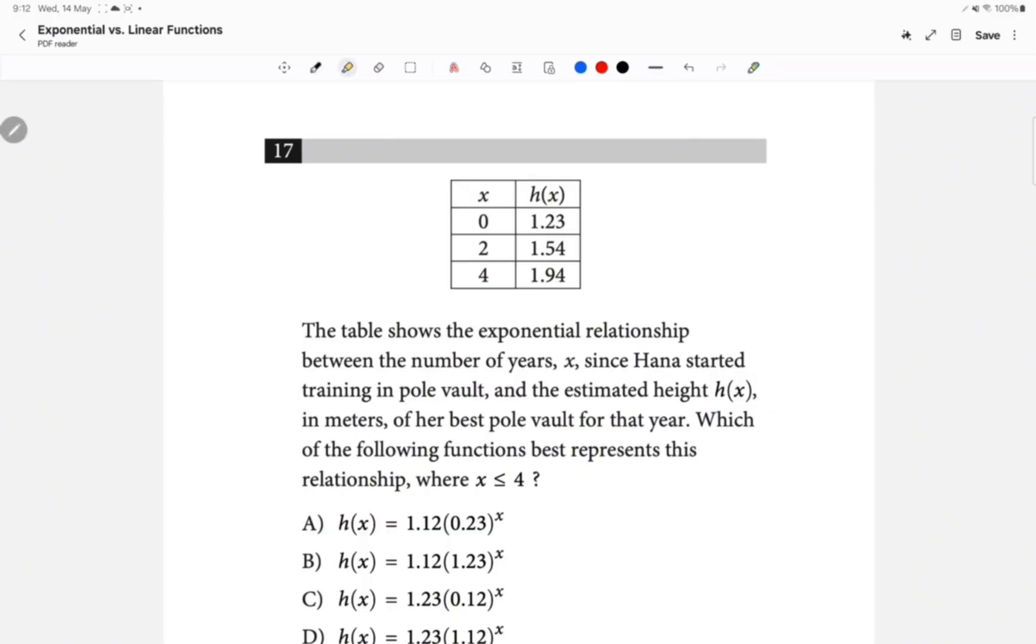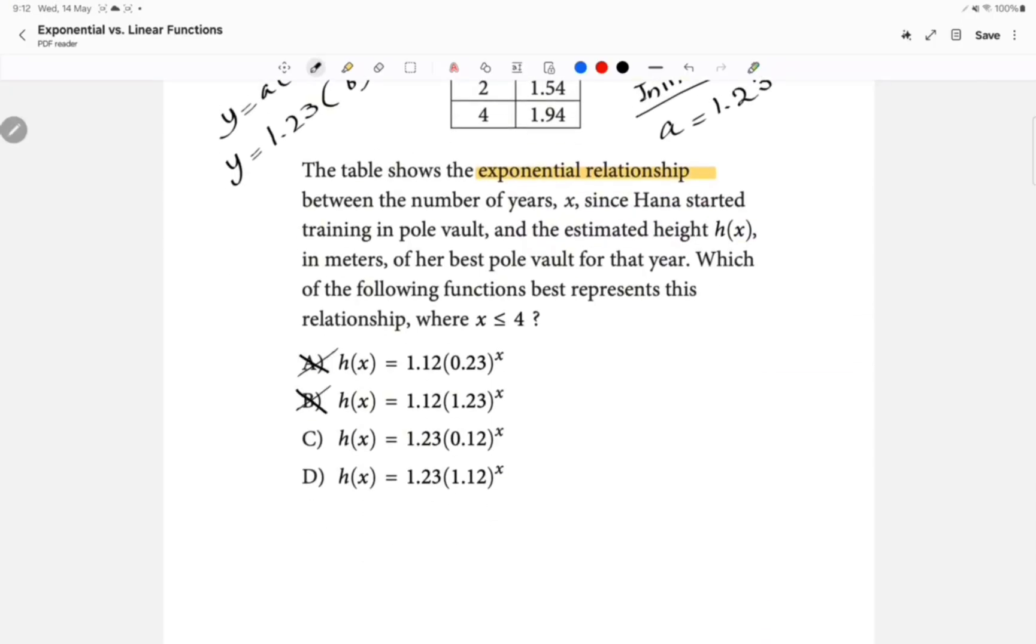With this question, we have an exponential relationship, and we're supposed to be figuring out the equation. Now, what we know is that when the time is 0, H of X is equal to 1.23. That would mean that initially, the A amount of an exponential equation would be equal to 1.23. And don't forget, the expression for the exponential equation is going to be Y equals A times B to the power of X. So you must have 1.23 on the outside. So it's not going to be choice A, and it's not going to be choice B.